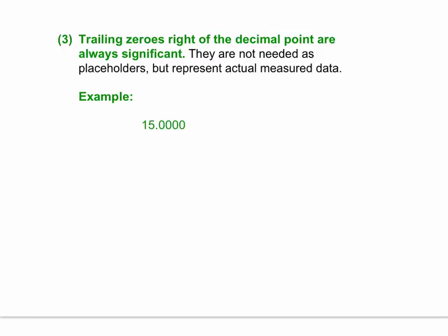If you look at the example below, you have fifteen point zero zero zero zero. These zeros are not needed to show that this is fifteen. They are needed though to show that this was measured and it is known to be exactly fifteen out to the ten thousandth spot. So in this case, we would have two sig figs from one and five and then four more from these trailing zeros after the decimal point.